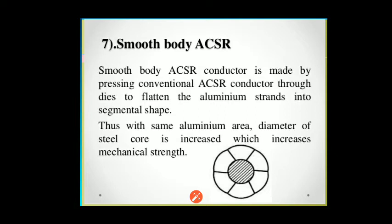Seventh, the smooth body ACSR conductor. As shown in the diagram, it is made by pressing the conventional ACSR conductor through dies to flatten the aluminium strands into a segmental shape. With the same aluminium area, the diameter of the steel core is increased, which increases the mechanical strength. This type of conductor has high mechanical strength and good mechanical capability.